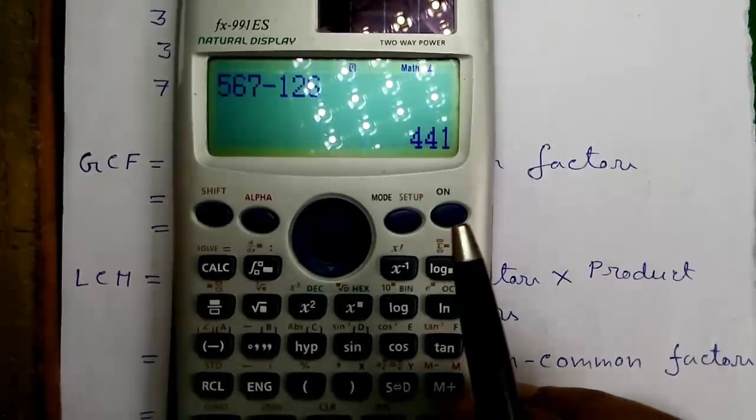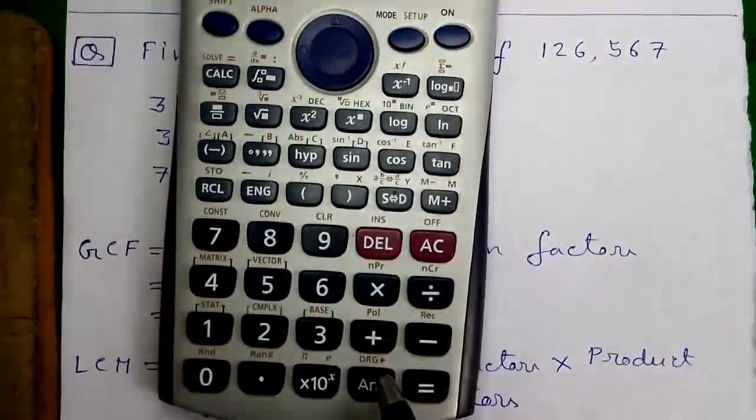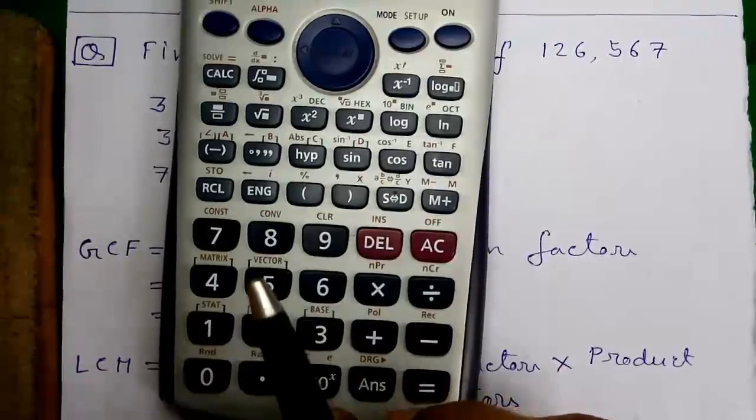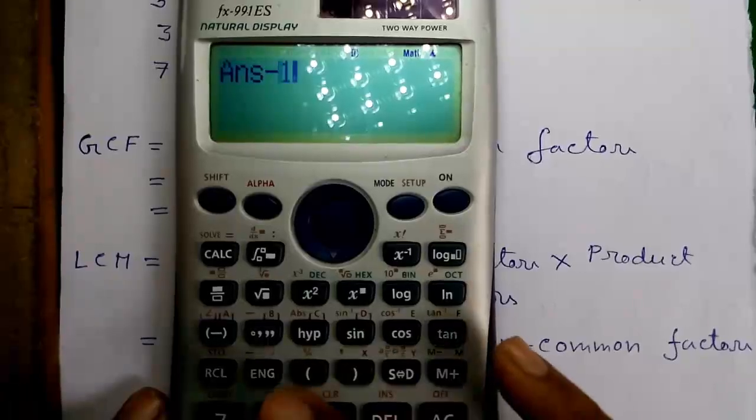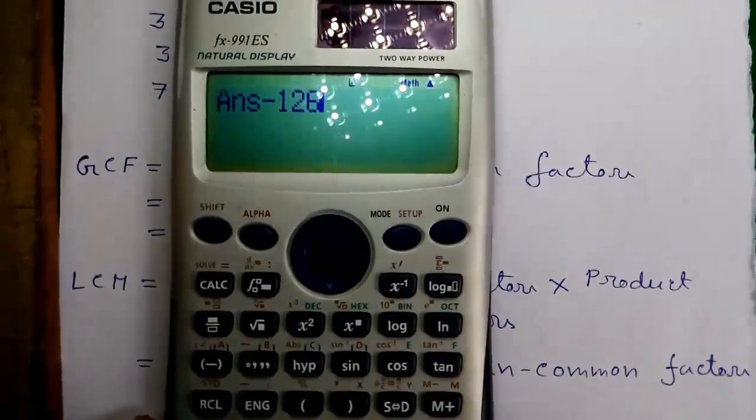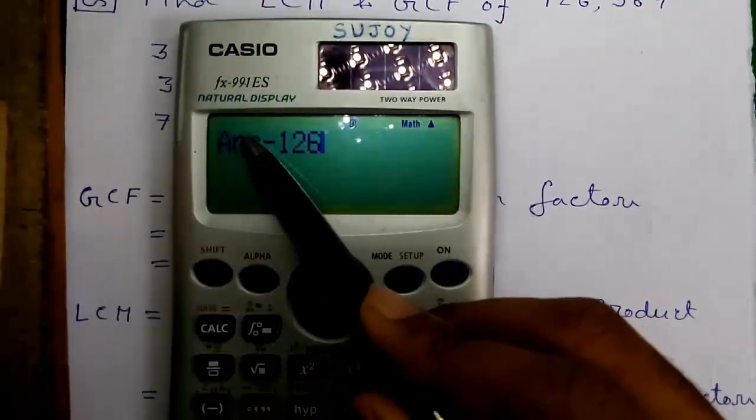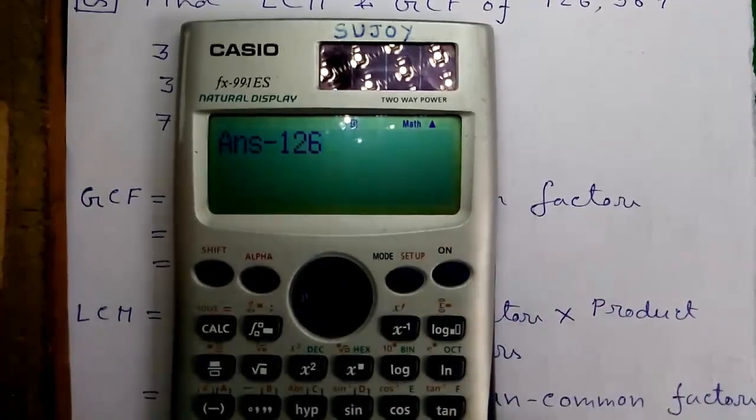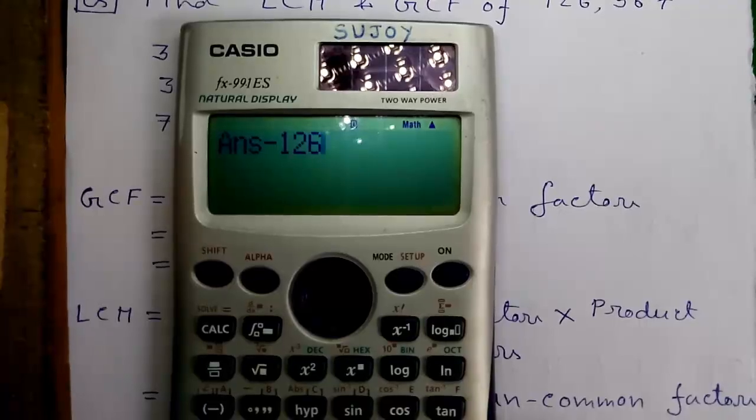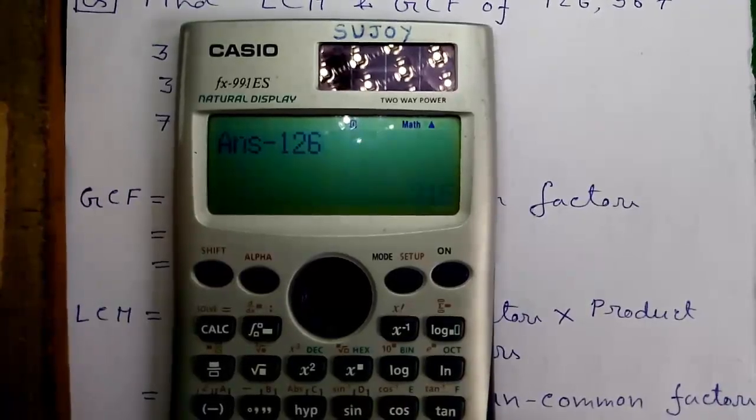And now our answer 441 is stored in the answer variable. So press answer for that, minus B that is 126. So our answer is 441 minus 126. So we will continuously perform the subtraction operation. For that press the equals button.